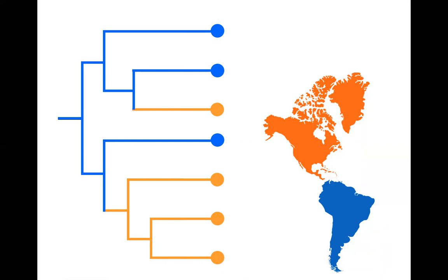This allows us to reconstruct or estimate the ranges of ancestral species and ancestral populations, and allows us to ask and answer pretty interesting questions. For example, if we look all the way on the far left, we see that the base or root of this tree is blue, meaning this group likely originated within South America. We can look further at this tree and see how many times this group has dispersed out of its original region — and what we see is that this group dispersed not once but twice from South into North America, at two different points in the tree, meaning two different populations at two different points in time.